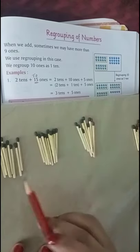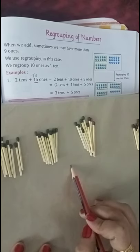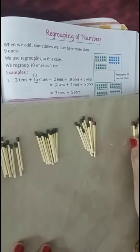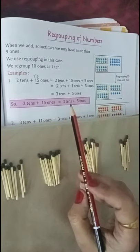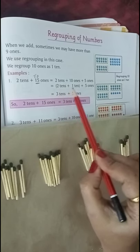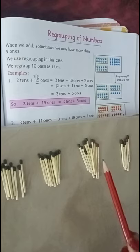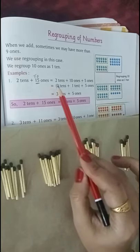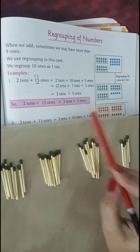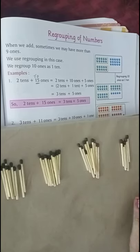So how do we divide this? 10 plus 10 plus 10, 3 tens. 3 tens plus 5 ones. Look at your book. 2 tens plus 1 ten plus 5 ones. 2 tens plus 15 ones equals 3 tens plus 5 ones. Clear?